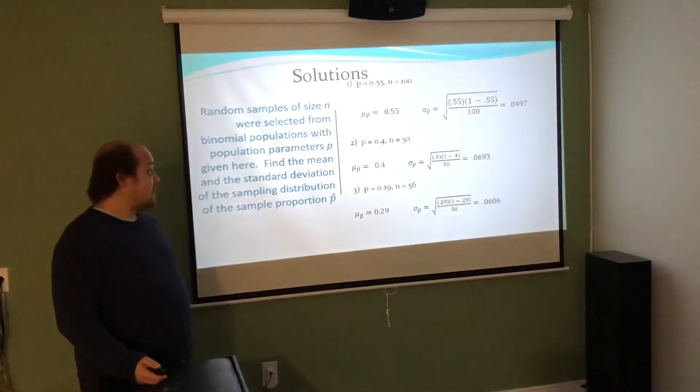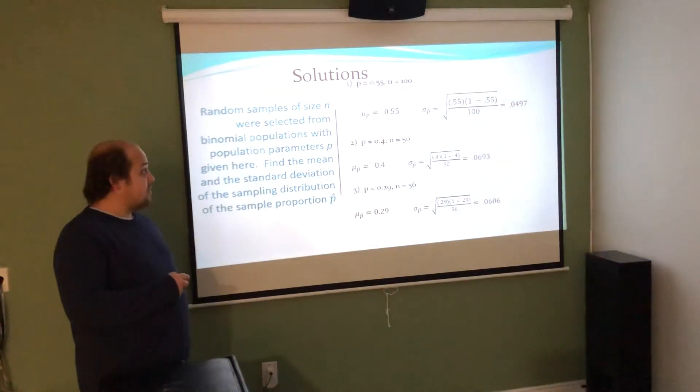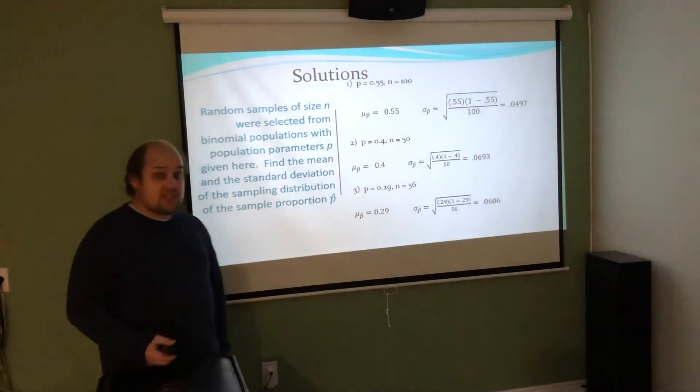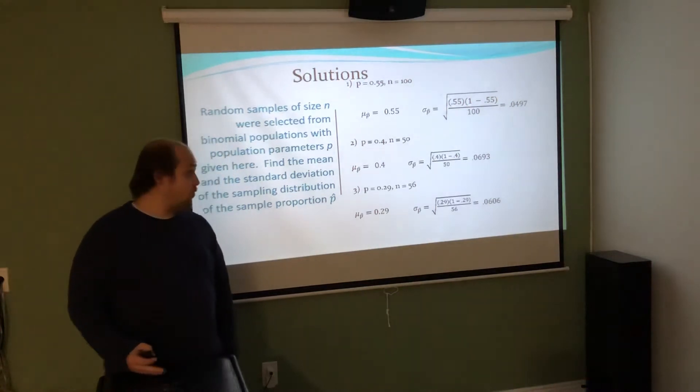I need to take 0.55 times 1 minus 0.55 over 100 all under the square root. Mu sub p hat is just whatever the given p is for each of these. When I'm doing this calculation, I'm doing p times 1 minus p over N all under the square root. I got 0.0497, 0.0693, and 0.0606.